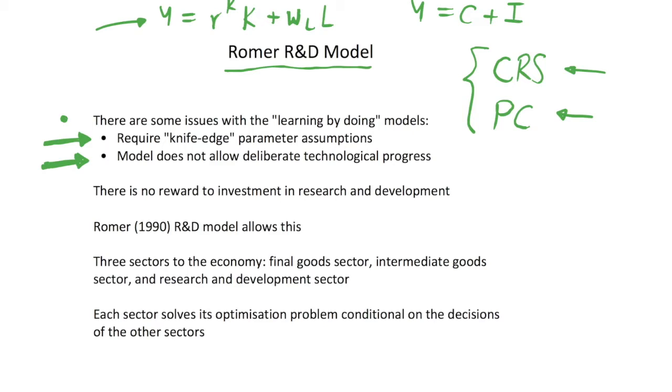So the only thing we have in the learning by doing models is just spillovers from each firm making their own optimal decisions. This isn't really what we notice in reality. We do have that firms invest in research and development, and we actually have some sort of monopoly power. Learning by doing models assume that once one firm learns about something, every other firm can benefit from this knowledge. When in reality, we have things like patents and copyright laws, which mean that individual firms can benefit from conducting research and development. This is what we have in the Romer R&D model.